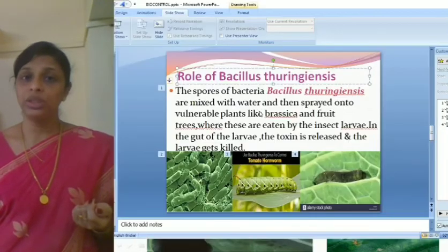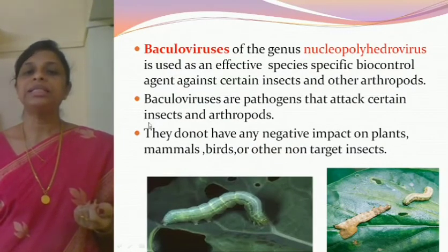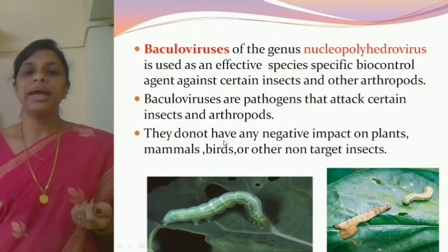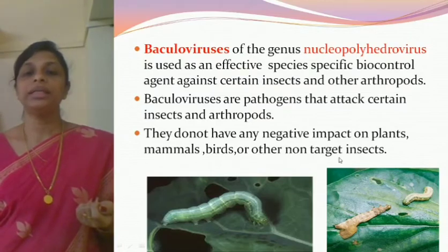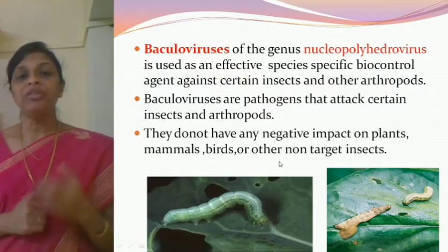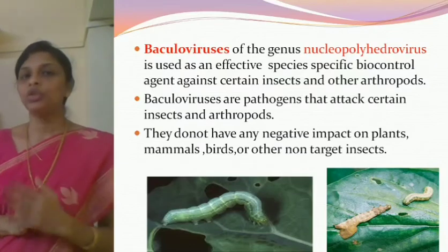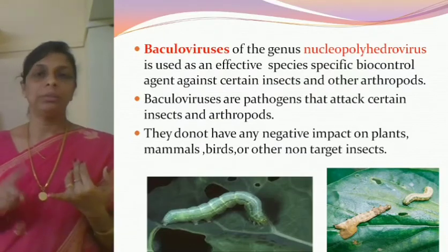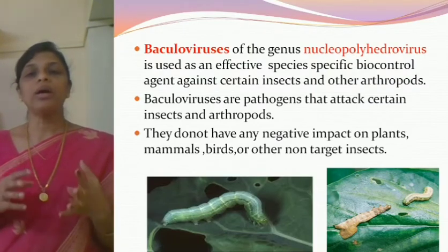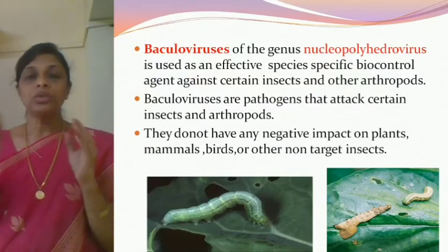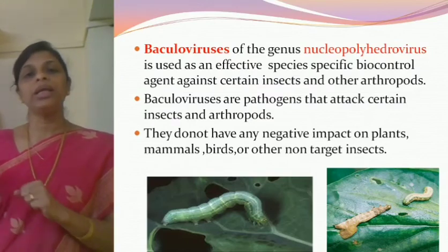Baculoviruses are pathogens that attack certain insects and arthropods. They do not have any negative impact on plants, mammals, birds, or other non-target insects. That is the most important benefit of using baculoviruses — they are species-specific, meaning they will attack only certain kinds of insects or arthropods and are not harmful to any other organisms.